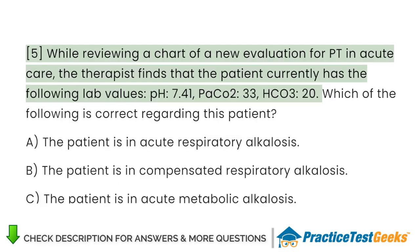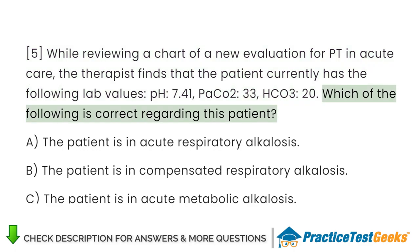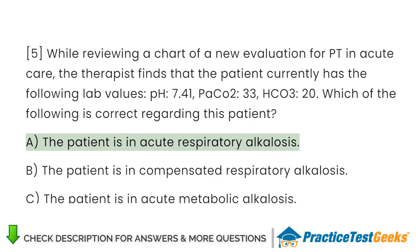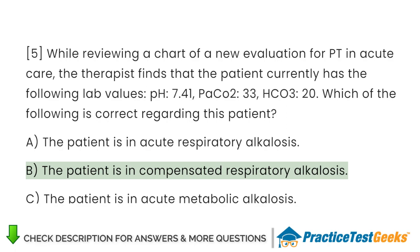While reviewing a chart of a new evaluation for PT in acute care, the therapist finds that the patient currently has the following lab values: pH 7.41, PaCO2 33, HCO3 20. Which of the following is correct regarding this patient? A. The patient is in acute respiratory alkalosis. B. The patient is in compensated respiratory alkalosis. C. The patient is in acute metabolic alkalosis.